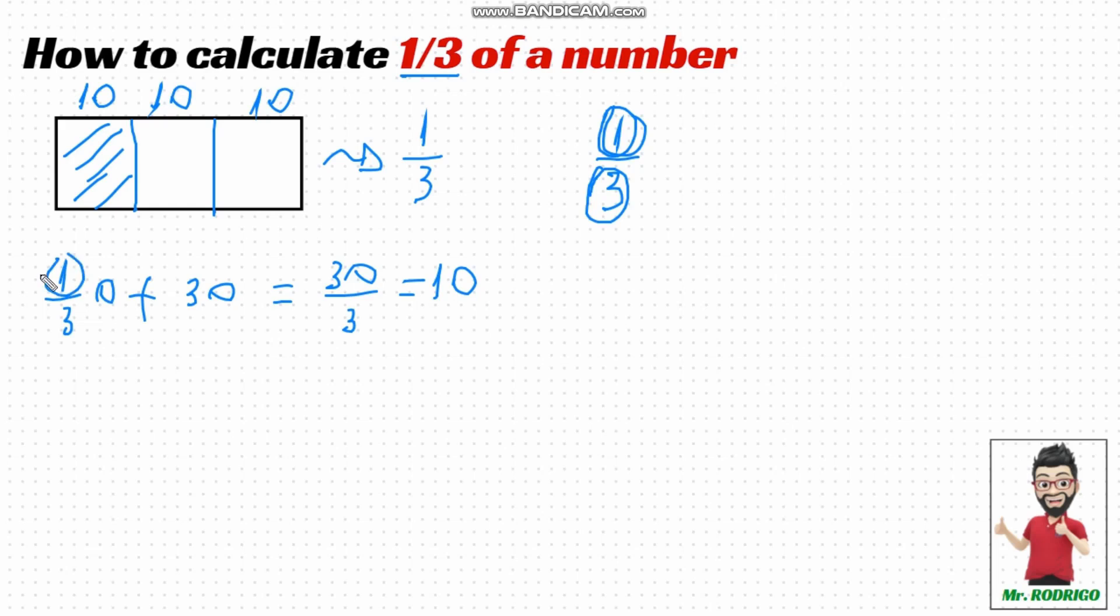Since I only want one part, I'm going to take just one part from this division, which is the number 10. So, that's what we've already done here, 30 divided by 3 equals 10.